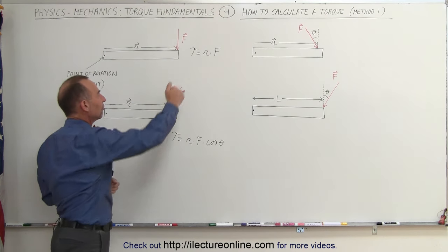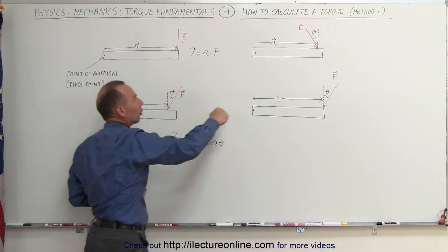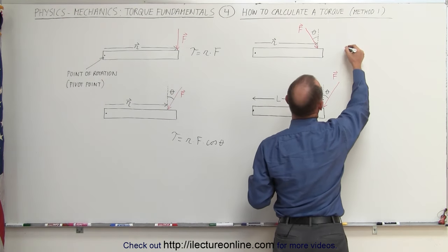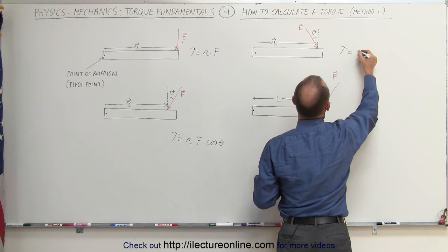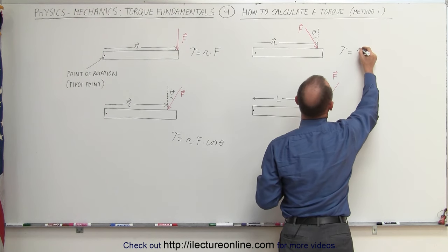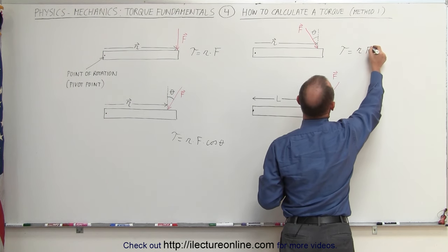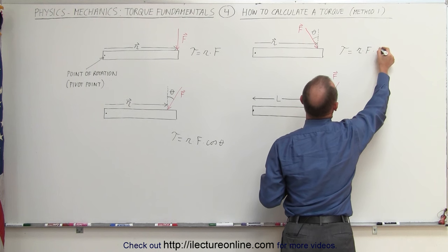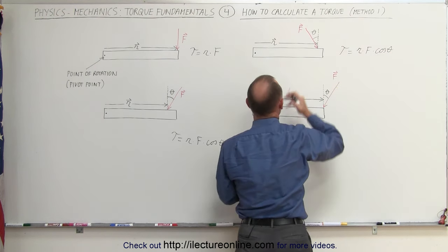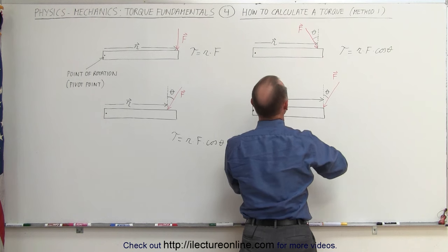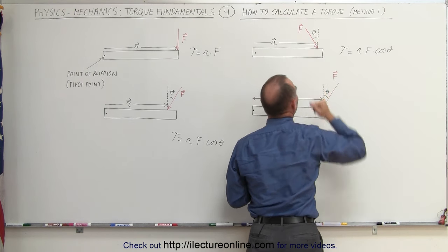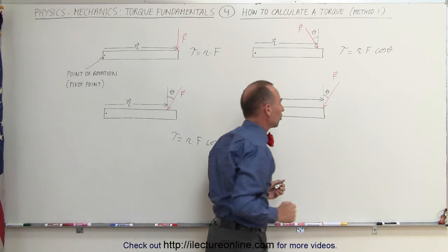It doesn't matter if the force is directed in this direction or in that direction. In either case, you can say that the torque is equal to the magnitude of the position vector times the force times the cosine of the angle between them. Again, we use the cosine because it's the angle between the perpendicular to the position vector and the force.